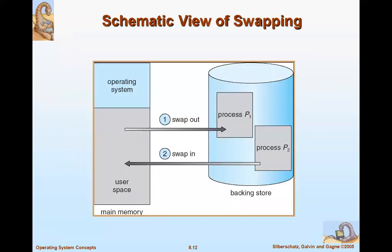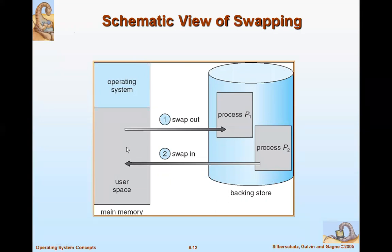You can see the schematic diagram of swapping. In main memory, the top part is the operating system and the lower part is user space, currently running processes P1 and P2. We swap out process P1 into the backing store to make space, then bring process P2 into user space for execution, since there was no space to keep P2 initially.